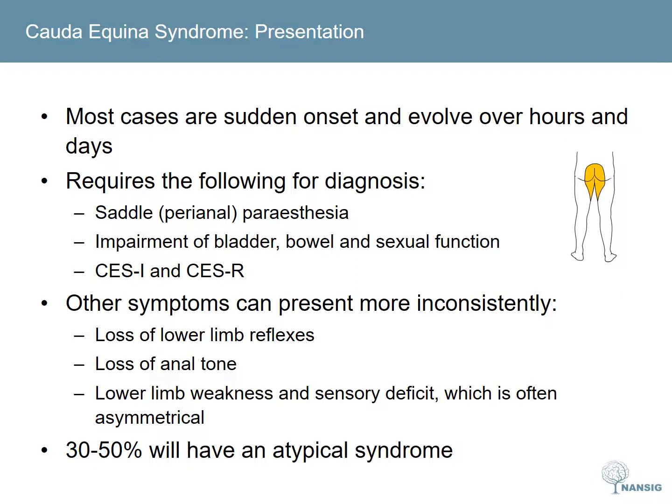Usually, CES has a sudden onset, with a clinical picture evolving over hours and days. Saddle or perianal paraesthesia, plus impairment of bladder, bowel, or sexual dysfunction are required for a diagnosis of cauda equina syndrome to be made.